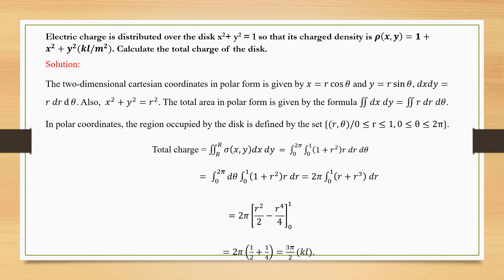How do we get x² + y² = r²? When squaring x and y, you get r²cos²θ + r²sin²θ. Taking r² as the common term, you get cos²θ + sin²θ = 1, so it results in r². The total area in polar form is given by the double integral of r dr dθ, so dx dy becomes r dr dθ in polar form.